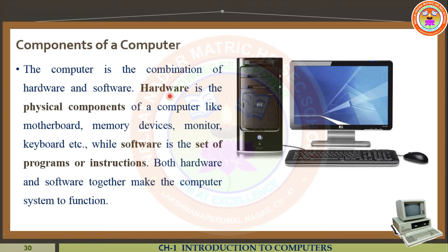Software means a set of programs or instructions — that is known as software. It will perform some specific task or multiple tasks. That is known as software or application. Both hardware and software are interdependent. Without hardware, we can't do any work in the computer, and without software, we can't do any work in the computer. So both are very important — both hardware and software together make the computer system function.